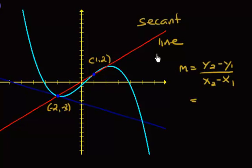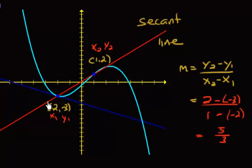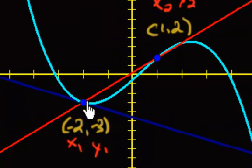I'm going to call one comma two: y2 and x2, and then negative two comma negative three: x1 and y1. So we're going to get two minus negative three over one minus negative two, which gives us five over three. So the slope of this secant line is five thirds, which makes sense because of rise over run — going up five and over three lands us right on that second point.